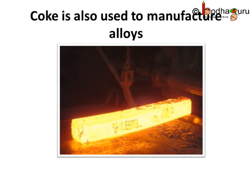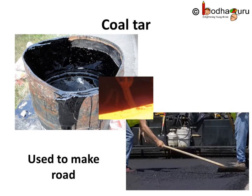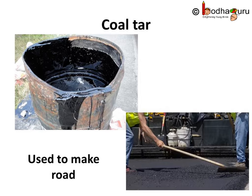Coke is also used to manufacture alloys, for example steel, and it is used to extract metals from minerals. Coal tar is a black, thick liquid with an odd smell. It is not a pure substance — it is actually a mixture of about 200 substances.